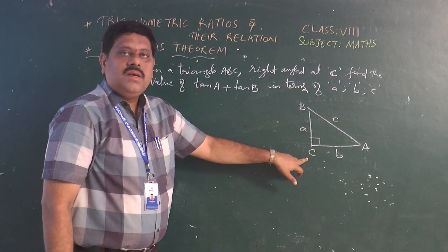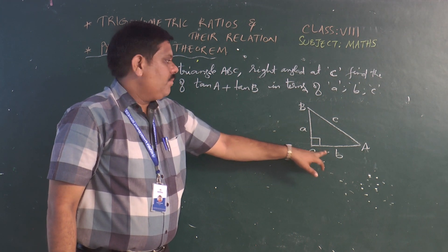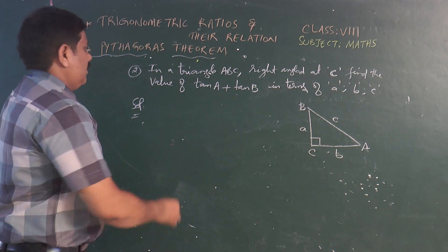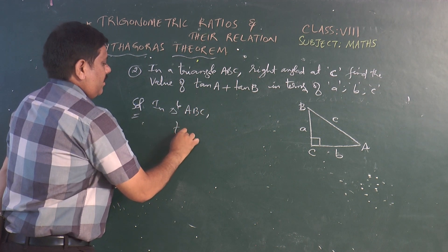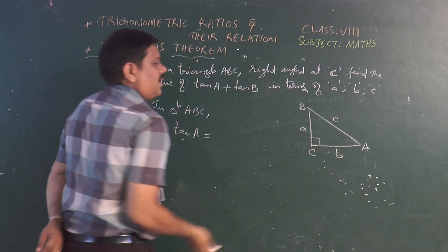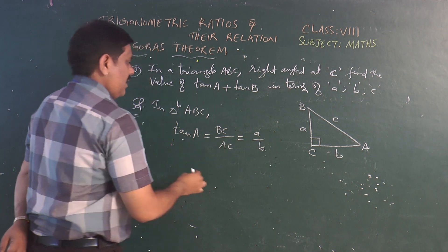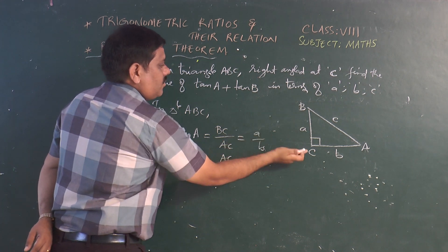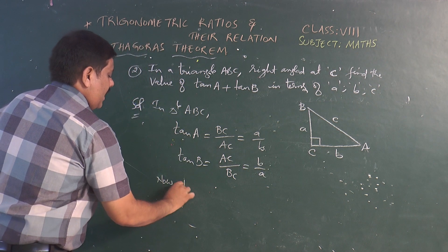As AB is opposite angle C, we represent AB as small c. AC is opposite angle B, so we represent it as small b. Now, tan A equals opposite over adjacent, which is BC / AC = a / b. Similarly, tan B equals opposite over adjacent, which is AC / BC = b / a.